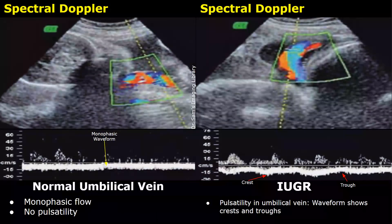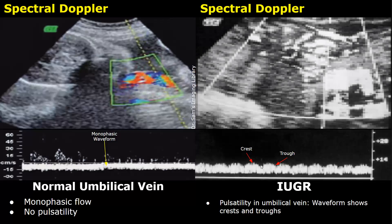Pulsatility in the umbilical vein, seen together with the previously mentioned features, can indicate IUGR. The normal umbilical vein has a steady venous flow without peaks and troughs — it is a smooth waveform. When pulsatility is present, the waveform shows prominent crests and troughs. Note that the pulsatility in the umbilical vein must be present without fetal movements or hiccups, as such movements can also cause pulsatility — so ensure hiccups and fetal movements are absent during umbilical vein evaluation.